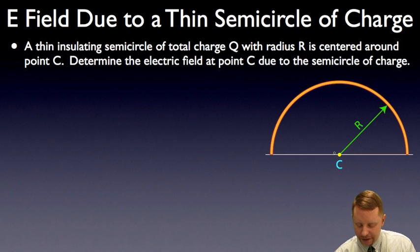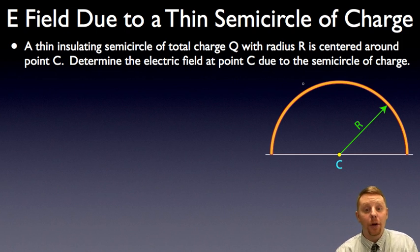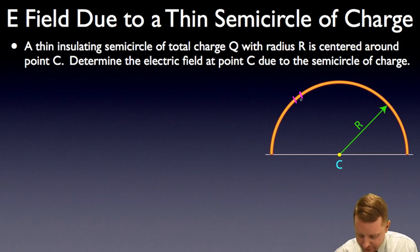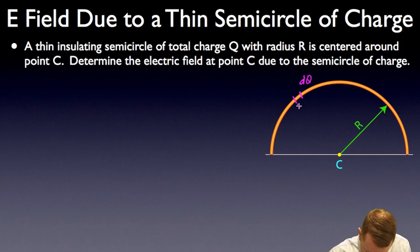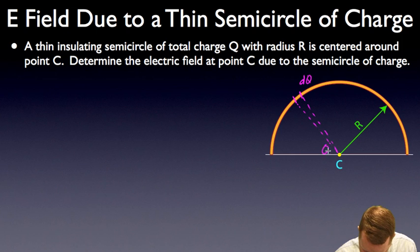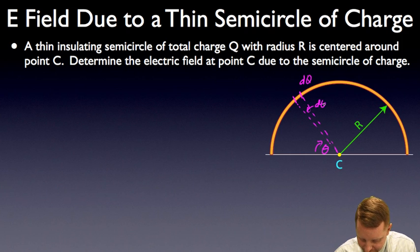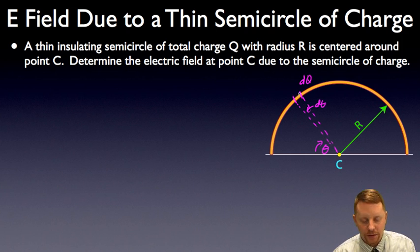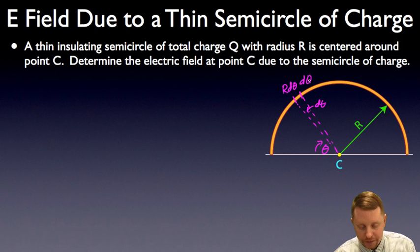My general strategy is going to be to take little tiny bits of charge, find the electric field due to each of those, and then sum all those up with an integral. To start that, I'm going to pick a little tiny piece of our semicircle that has some charge dq, and I'm going to define that in terms of its angle. If I call that angle theta, then this angle will be d theta. And if the radius is R, then the length of this little tiny differential of that semicircle will be R d theta, holding charge dq.